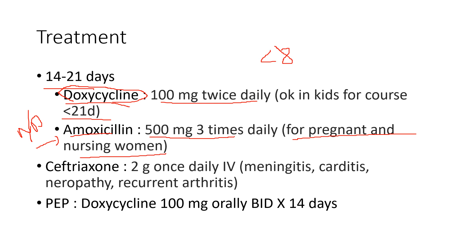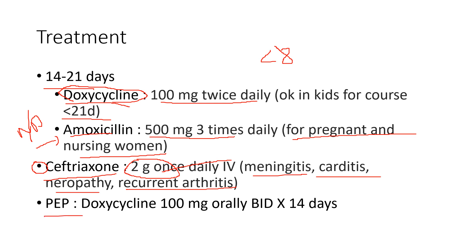The third drug is ceftriaxone, an IV medication given at two grams daily for 14 to 21 days. This is used for later-stage Lyme — stage two or stage three — where there are symptoms of nerve involvement, meningitis, carditis, or neuropathy, and for people with recurrent arthritis confirmed on Lyme testing after a course of doxycycline. This is the hospital drug; patients typically need to be admitted since it's an IV medication given over an extended course.